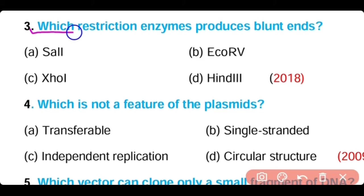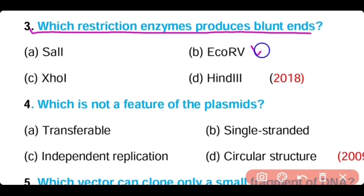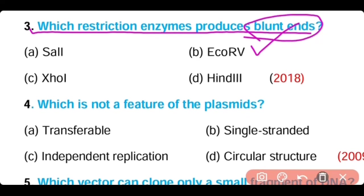Question 3: Which restriction enzyme produces blunt ends? Eco RV is a restriction enzyme type 2. It produces blunt ends.